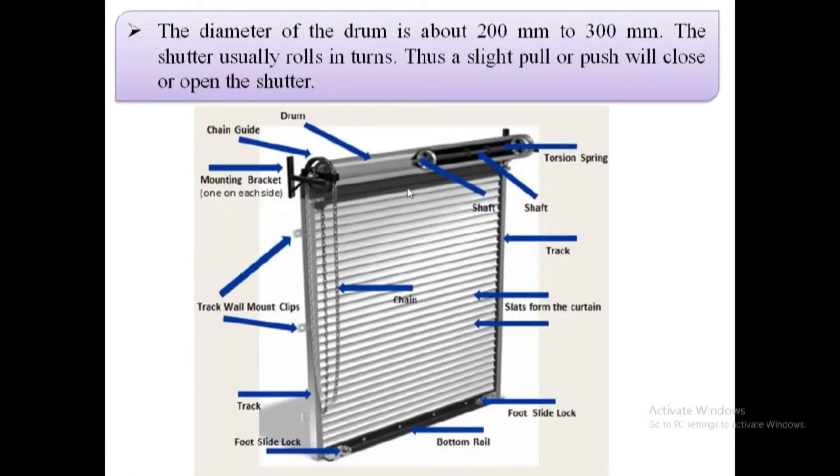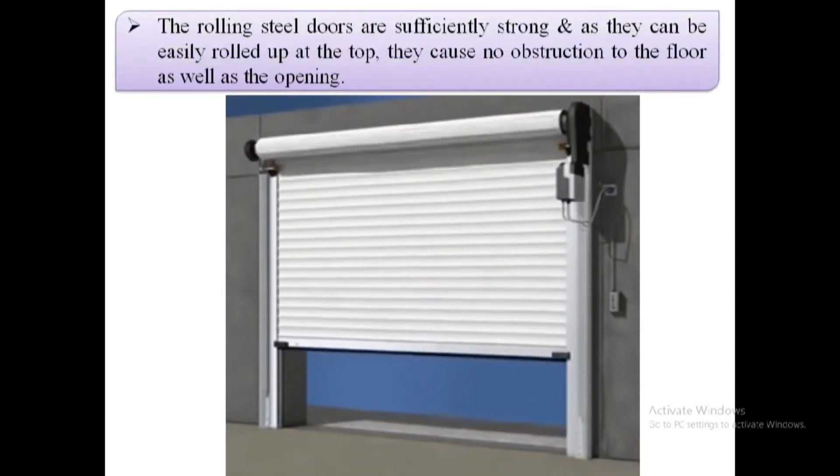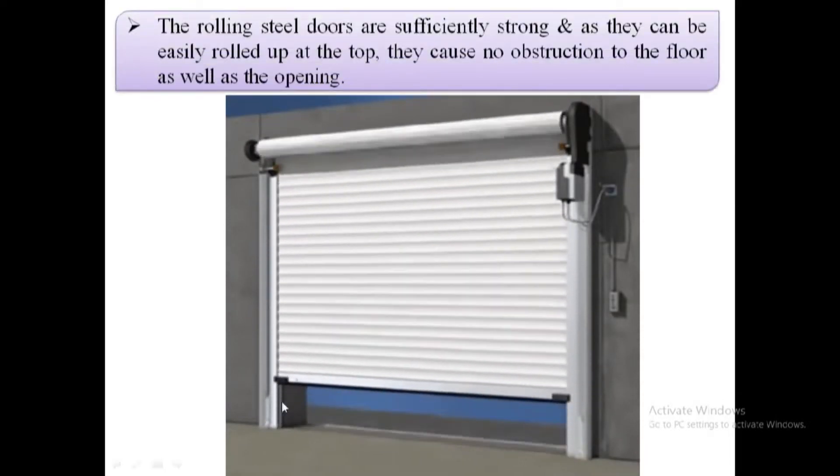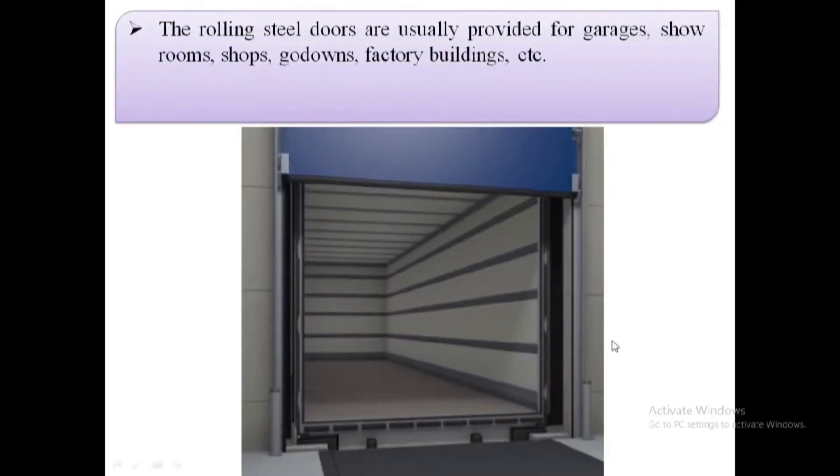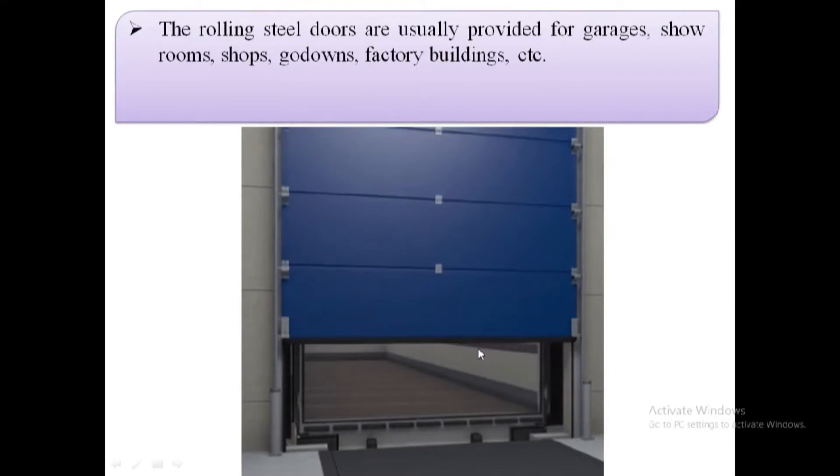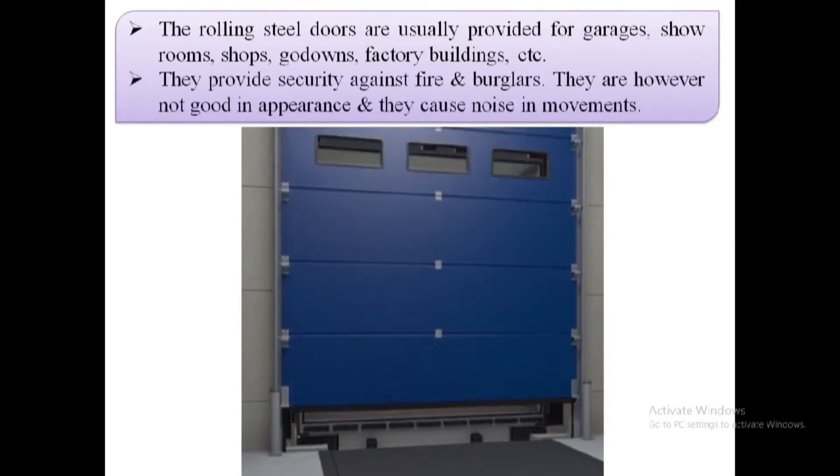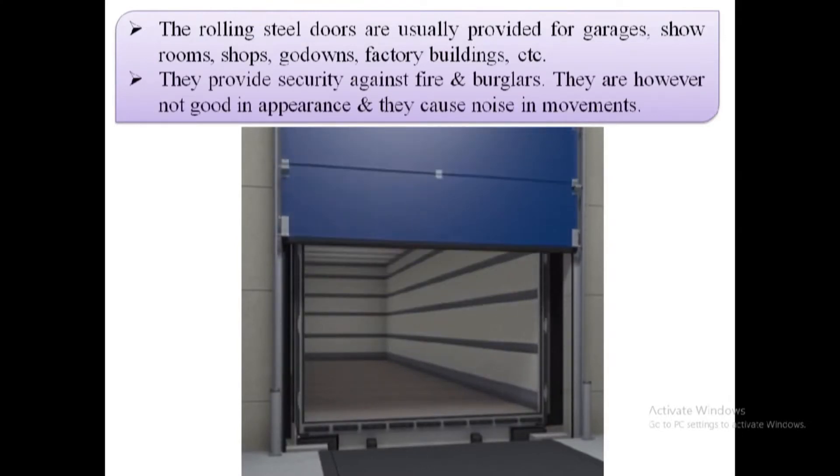The frame has steel guides on the sides in which the shutter moves. It has a horizontal shaft and spring provided in the drum, which make possible to open and close the door by pushing or pulling. These doors are commonly used for garages, go-downs, workshops, windows, front show windows.